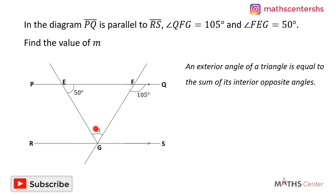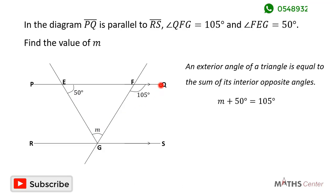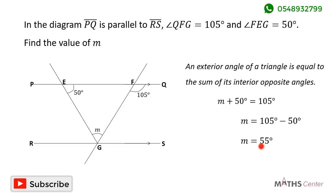The interior opposite angles of this exterior angle of 105 degrees are 50 degrees and m. The property says that an exterior angle equals the sum of its interior opposite angles, so m plus 50 degrees equals 105 degrees. Therefore m equals 105 degrees minus 50 degrees, which gives us 55 degrees. The value of m in this diagram is 55 degrees.